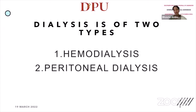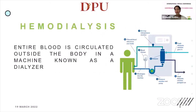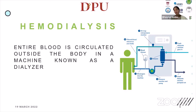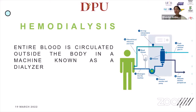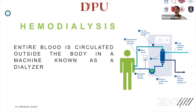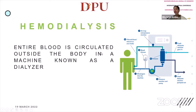The first type is hemodialysis. In hemodialysis, the entire blood is circulated outside the body through a machine. The blood that flows in our body is moved outside, where a machine called a dialyzer purifies it — removing all toxins — and then the purified blood is inserted back into the body.